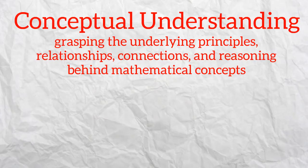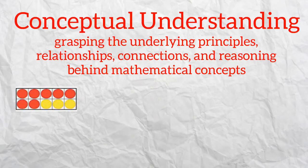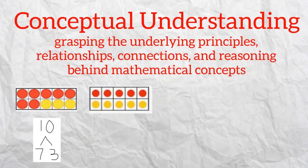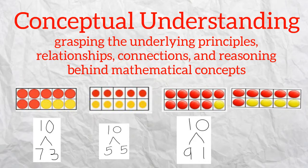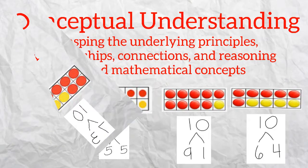An example of conceptual understanding would be knowing that 10 can be decomposed or broken apart in a variety of ways. We can make 10 with 7 and 3. 5 and 5 also can make up 10. We can also make 10 with 9 and 1 or 6 and 4. 10 can be broken apart or decomposed in a variety of ways. We can be flexible in thinking about how to compose 10.